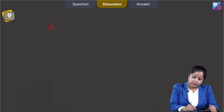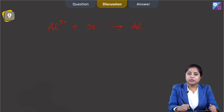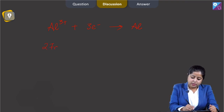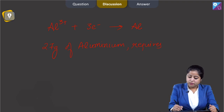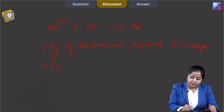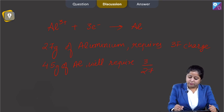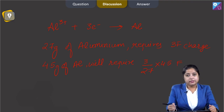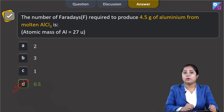Al³⁺ requires 3 electrons to give aluminium, which means 27 grams of aluminium (1 mole) requires 3 Faradays of charge. So 4.5 grams of aluminium will require (3/27) × 4.5 = 0.5 Faraday. The correct answer is option D.